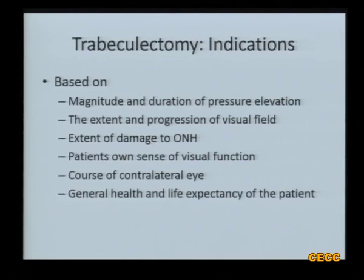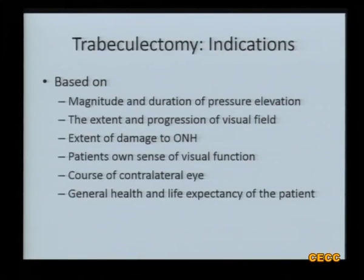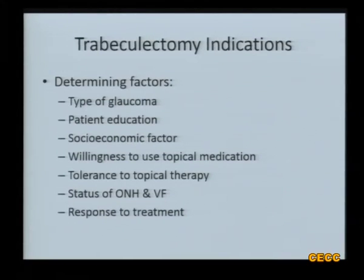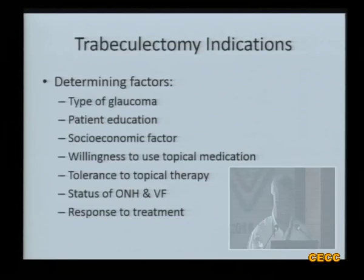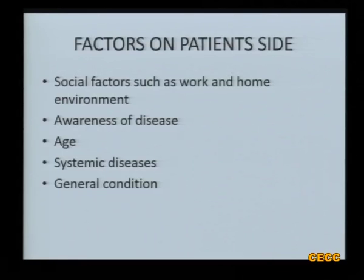The contralateral eye status, general health, and life expectancy all matter. We may be dealing with a patient aged 85 versus 35 — for an 85-year-old we need not be very aggressive or add all medications, whereas at 35 we should be more aggressive. Other factors include the type of glaucoma, socioeconomic factors, tolerance to medical therapy, response to treatment, patient awareness about the disease, systemic illness, and prognosis with non-surgical treatment.